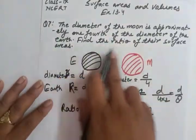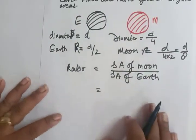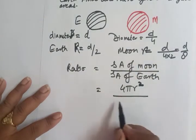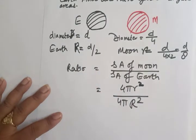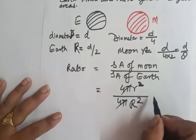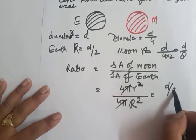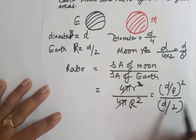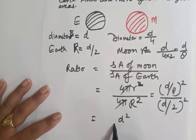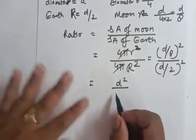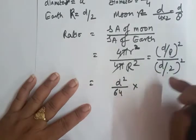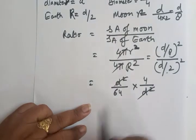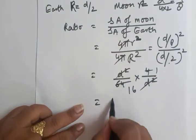The ratio of surface area of moon to surface area of earth equals 4π r² upon 4π R², which is (d/8)² upon (d/2)². That gives d²/64 upon d²/4. Taking the reciprocal and cancelling d², we get 4/64, which simplifies to 1/16.